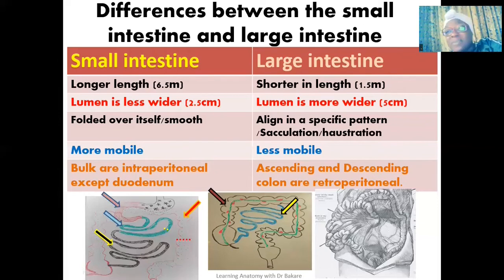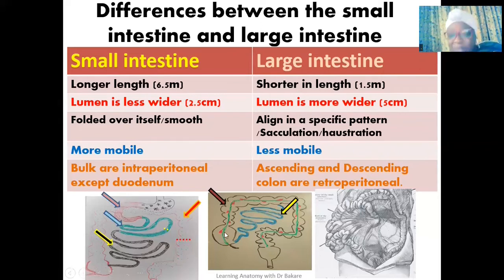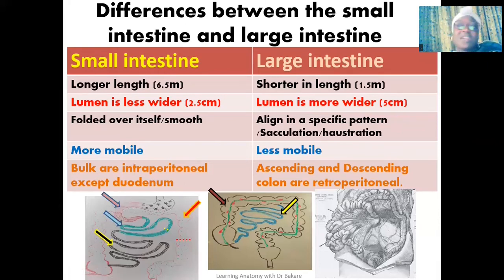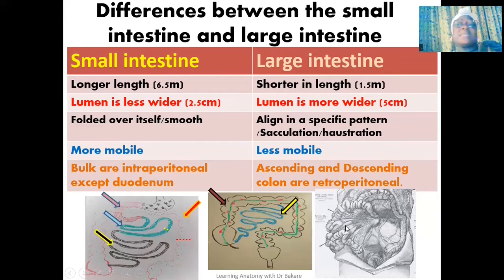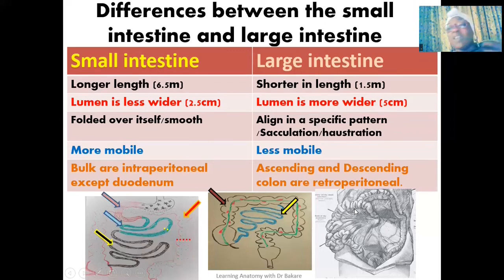Regarding mobility, the small intestine appears to be more mobile than the large intestine. The reason is that the bulk of the small intestine has an intraperitoneal presentation, meaning all surfaces are covered with peritoneum, leading to the formation of mesentery. This mesentery connects the organ to the posterior abdominal wall. The longer the mesentery, the greater the grade of movement the organ can exhibit.